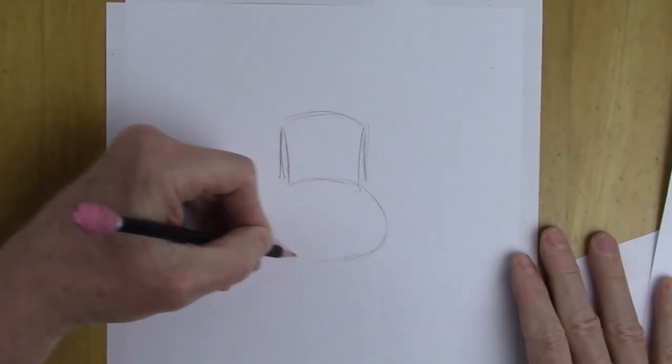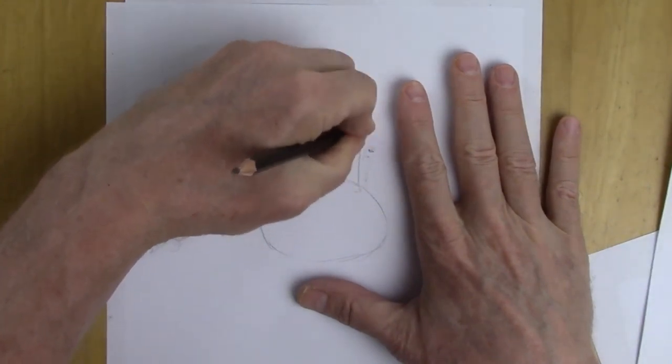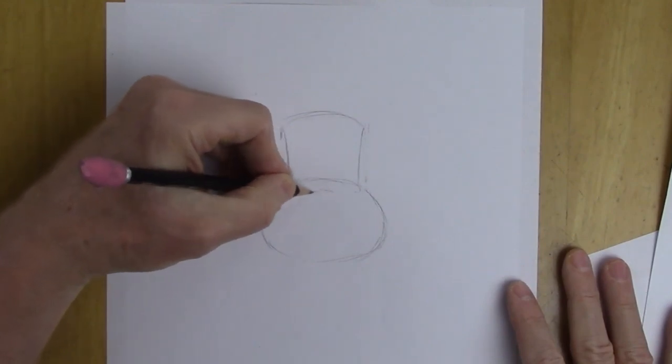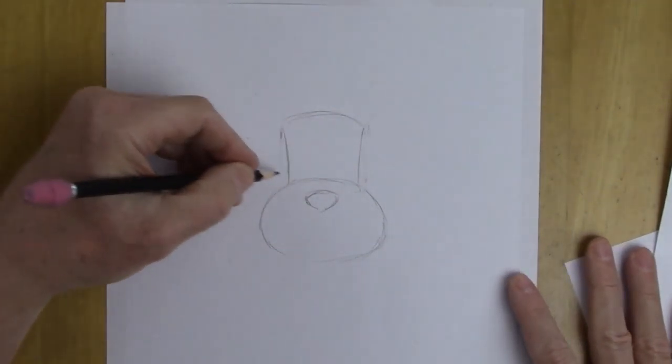So we'll do an oval and this sort of rectangular shape on top, just like that. Now over here in the middle, we'll start with a nose, a nice size nose for a little dog. It gets a lot of personality from that.